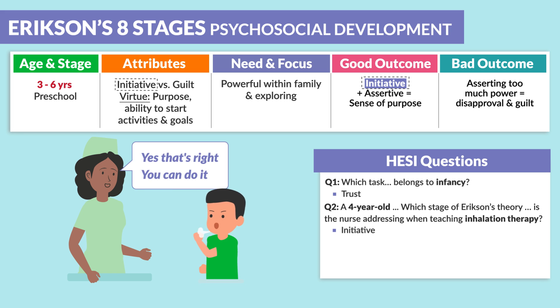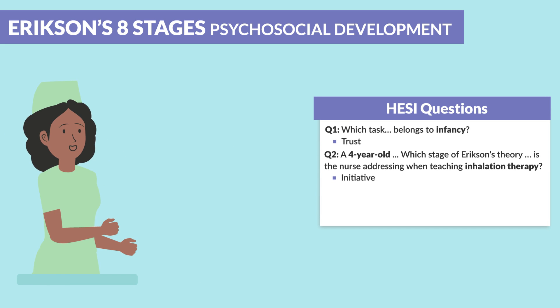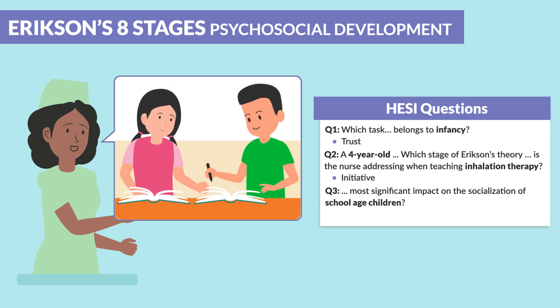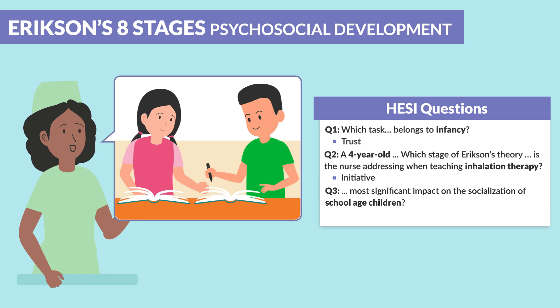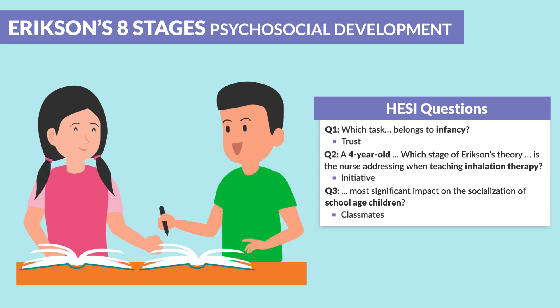As you can see, the older children get, the more they want to gain independence. A third question: the most significant impact on socialization of school-age children? Classmates. Independence and socialization grow as the child develops.